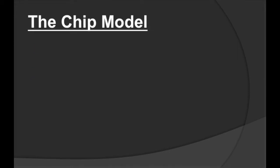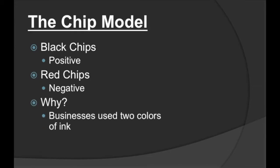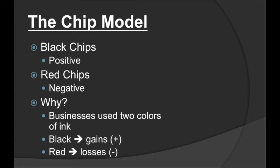First of all, what exactly is the chip model? It's when we use chips to represent the values of different integers. Black chips represent positive integers, and red chips represent negative integers. Back in the day, businesses used two colors of ink. They only used black to represent gains, and they only used red to represent losses. That's why black is used for positive integers and red is used for negative integers.